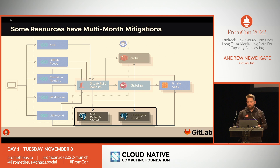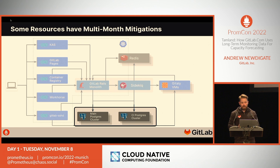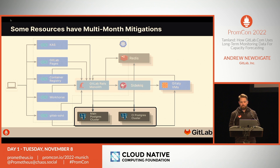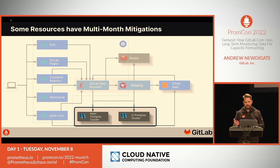The point is that some saturation issues have very long lead times that we need to address in order to resolve or mitigate them. Some saturation can be resolved within minutes — for example, if you're running on Kubernetes and get a traffic spike, the horizontal pod autoscaler will automatically correct the situation without any human interaction. But there are other resources with mitigations spanning weeks to months, and these are what our capacity planning effort is focused on.